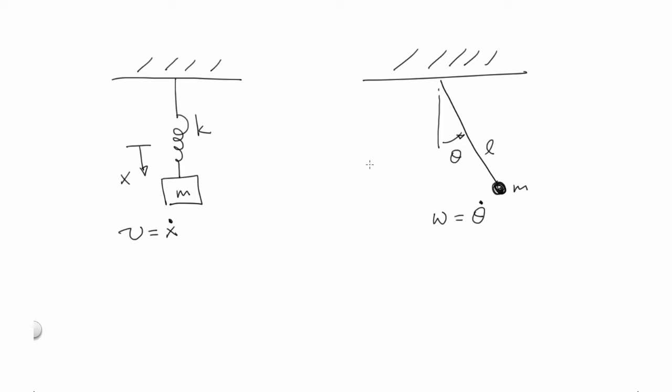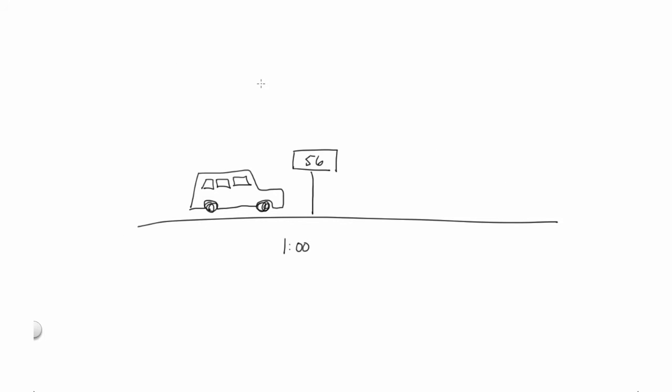why not just use that data to compute the derivative? You can think about doing this, for instance, with difference methods. If I'm in my car and I'm at kilometer fifty-six at exactly one o'clock, and then I'm at kilometer fifty-eight at one oh one, then my speed during that interval was fifty-eight minus fifty-six over one oh one minus one, or two kilometers a minute. That's called a first-order forward difference.